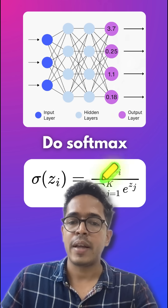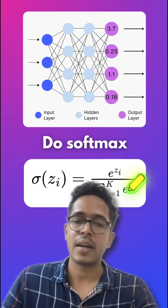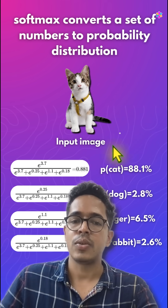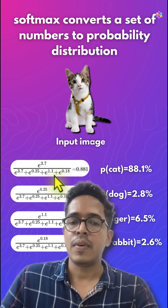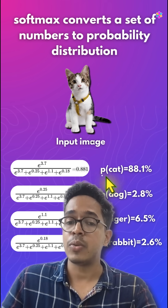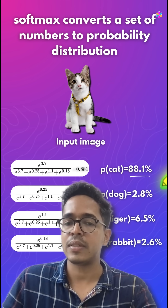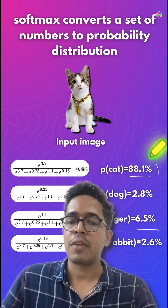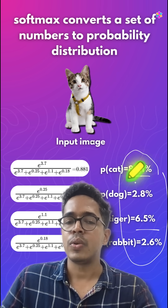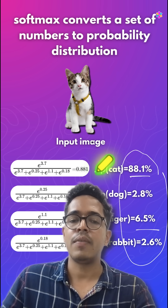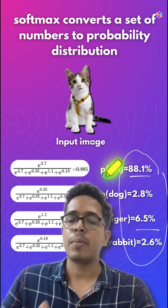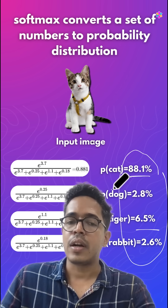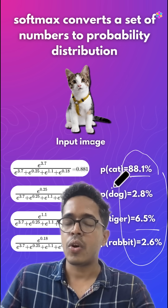In softmax, you apply a function like e raised to z divided by sigma e raised to z, and using this function you can get a probability distribution out of these four numbers. You can convert the numerical values into a softmax distribution where the probability for cat will be 88% and the probability for tiger will be 6.5%, and if you add up all four numbers you will get one. This is a technique to convert input numbers into a set of probability distributions, and it is also used for converting a linear set of numbers into non-linear outputs.